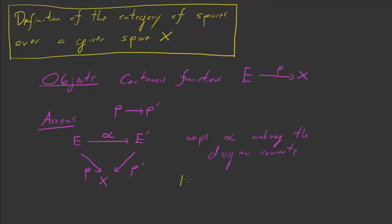What I'm basically trying to say is that Hom in this category, the category of spaces over a given space x, we'll call it c. Hom in c, between p and p prime, is equal to the alpha, instead of all alpha from e prime, making the diagram commute.